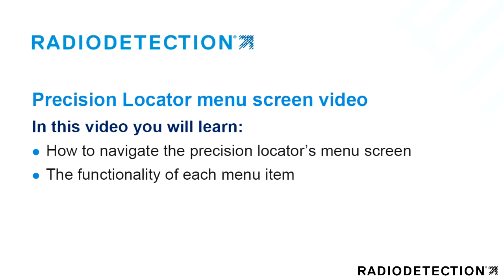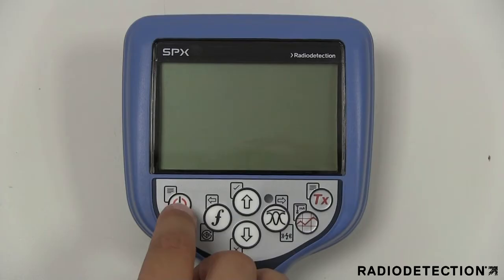In this video you will learn how to navigate the Precision Locator's menu screen and the functionality of each menu item. The Precision Locator settings are accessed via the menu and here it is possible to change settings according to your personal preferences and operating requirements.